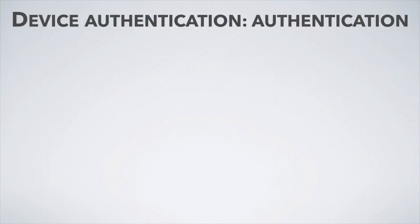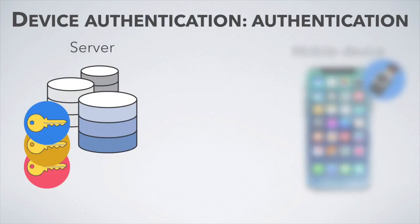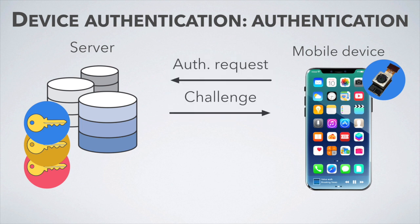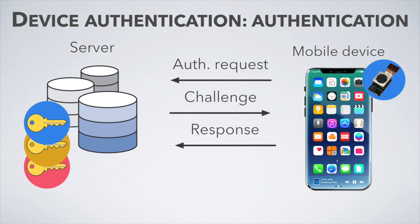During the authentication phase, the mobile device requests authentication from the application server. The application server sends a challenge to the mobile device. The mobile device generates a key from the challenge and sends it to the application server, where the generated key is compared to the reference keys by the server.